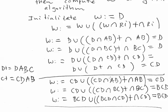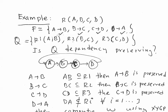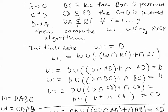To summarize: we check each dependency. A→B — preserved. B→C — preserved. C→D — preserved. For D→A we couldn't tell initially by inspection because D,A is not a subset of any of the three proposed tables. That's why we ran the W algorithm. Now let's look at the following example.